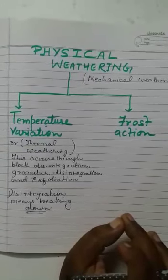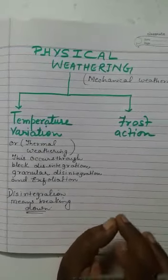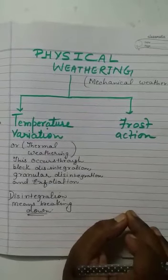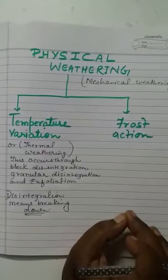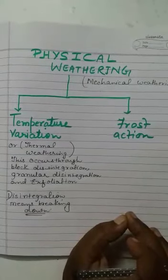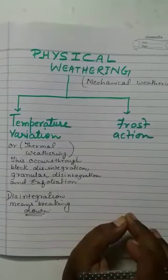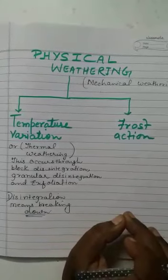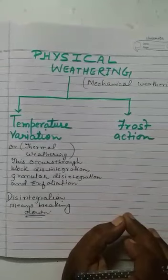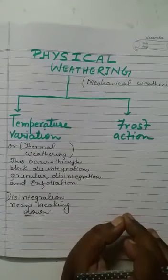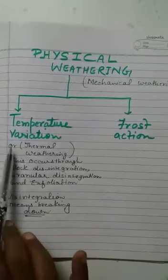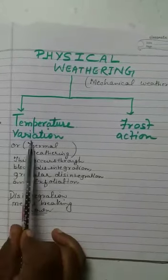Again, I am repeating: physical weathering is the mechanical disintegration - means breaking down of rocks without any change in their chemical composition. It takes place either due to temperature variation or frost action. Now, first of all, we will discuss temperature variation.